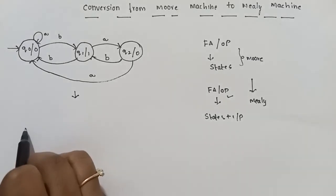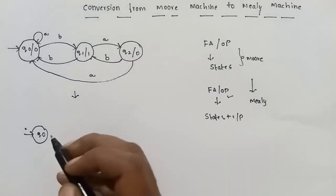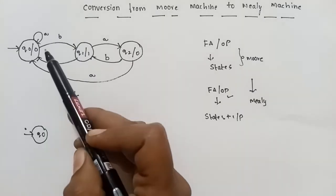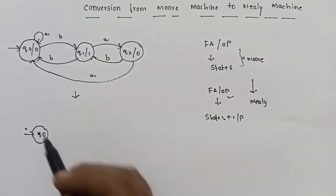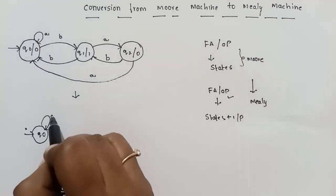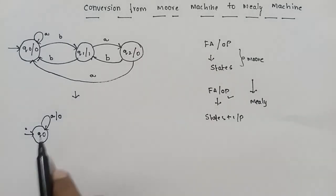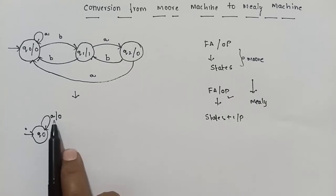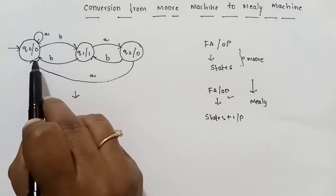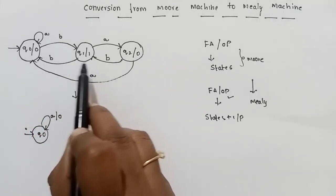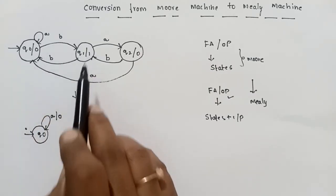In the Mealy machine, the input and output are associated with transitions. First, q0 on input a goes to q0 with output 0. Next, q0 on input b goes to q1 with output 1.